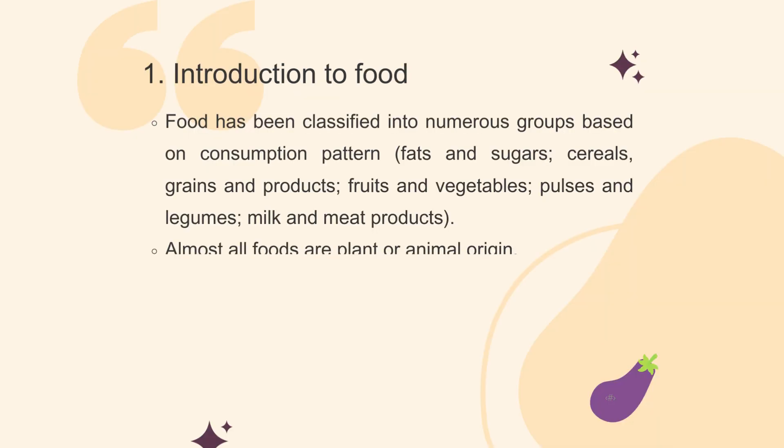Food has been classified into numerous groups based on consumption pattern. These include fats and sugars, cereals, grains and products, fruits and vegetables, pulses and legumes, and milk and meat products. Almost all foods are of plant or animal origin, and humans need food for normal growth and development.